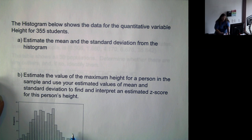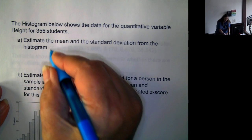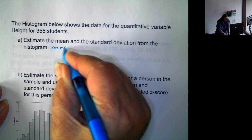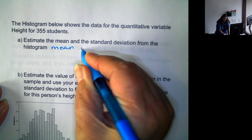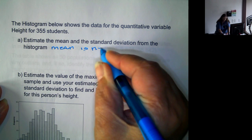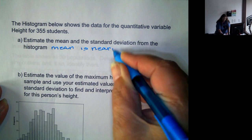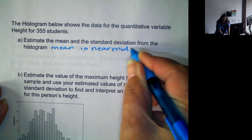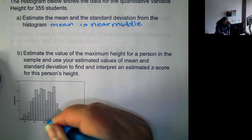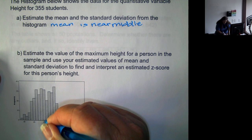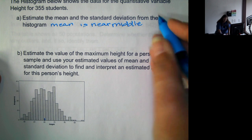Since it's fairly symmetric and bell-shaped, the mean is near the middle. And the middle is right here around 68. So it's about 68.